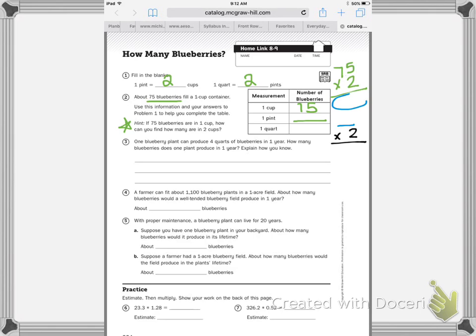Problem three says one blueberry plant can produce four quarts of blueberries in a year. How many blueberries does one plant produce in one year? So you need to take your purple answer that I'm circling and multiply that by four.